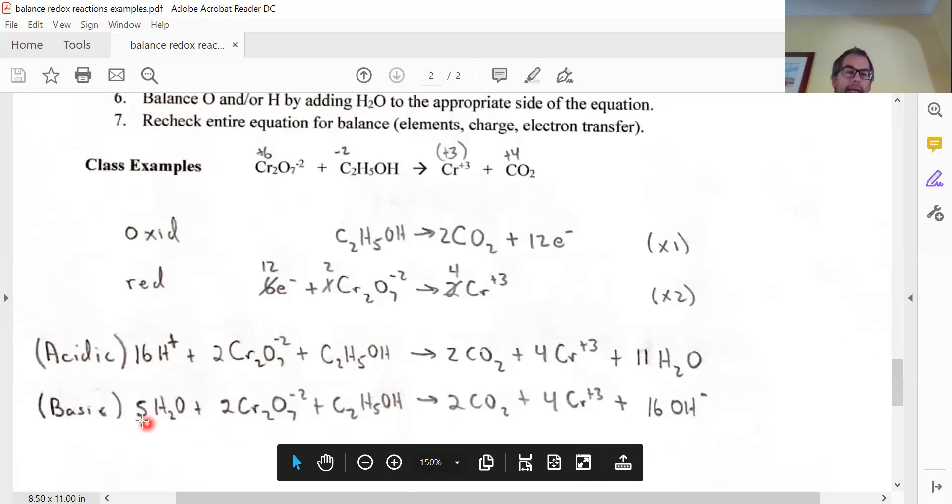And then what that gives me is hopefully the oxygens work out here. I got five oxygens. I have 14 oxygens for a total of 19 oxygens.